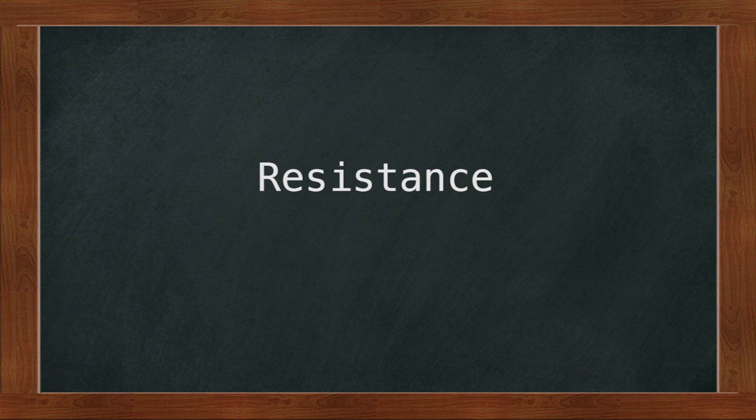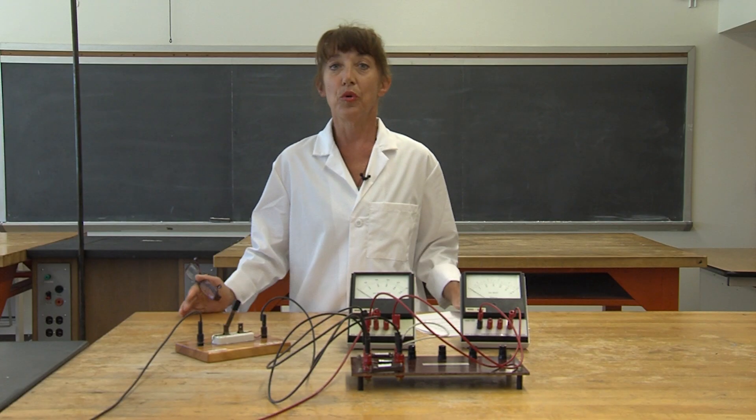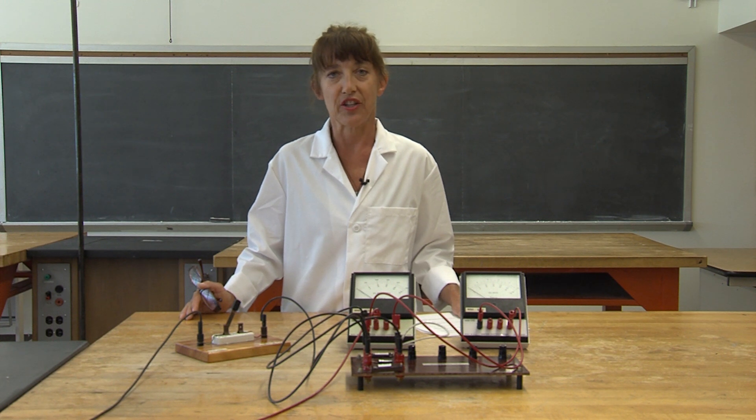In any given circuit, voltage, current, and resistance are governed by Ohm's law, which states that voltage equals current times resistance, or V equals I R. We will be using this law today for our calculations.